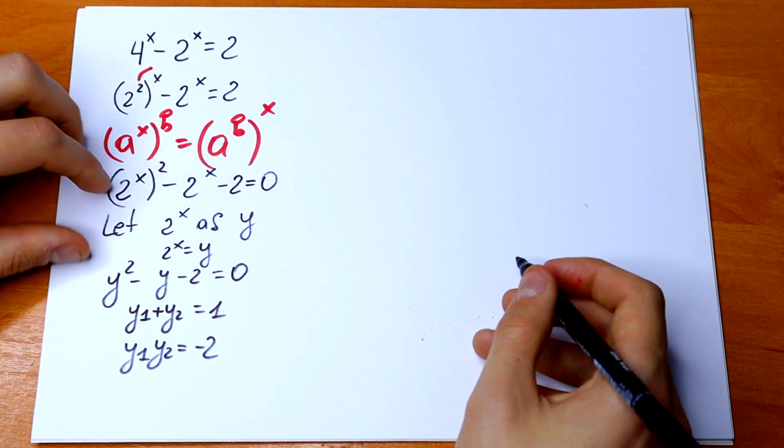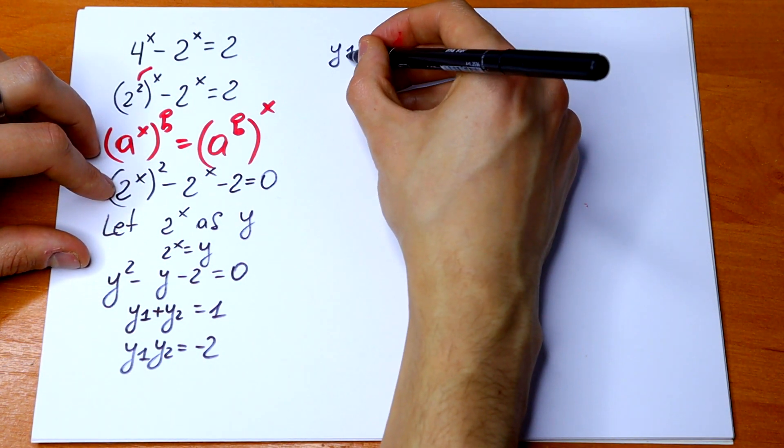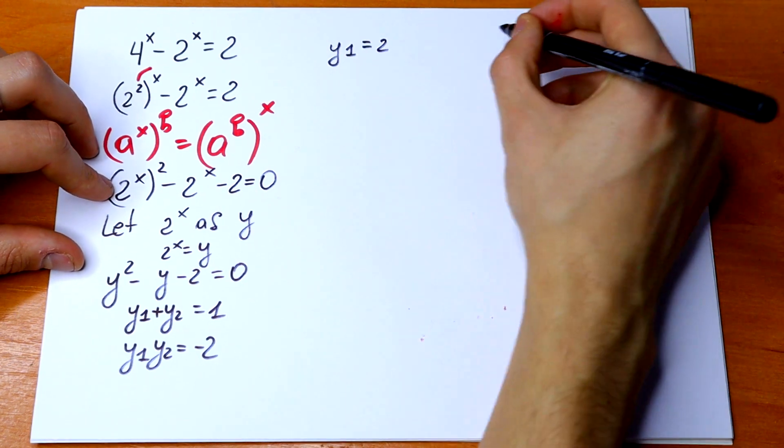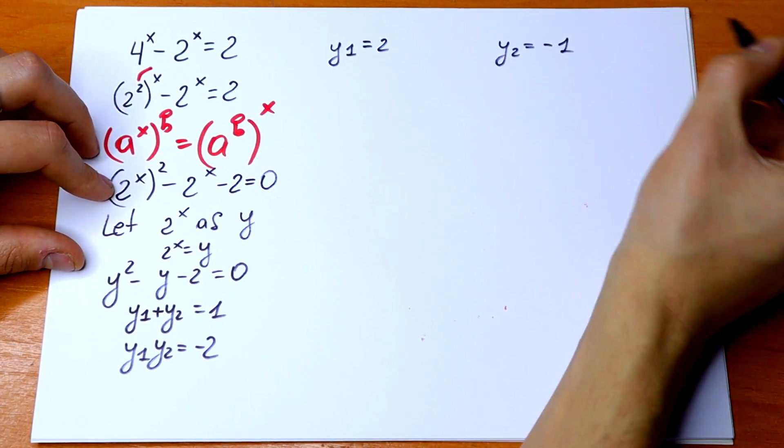So our roots will be y₁ = 2 and y₂ = -1.